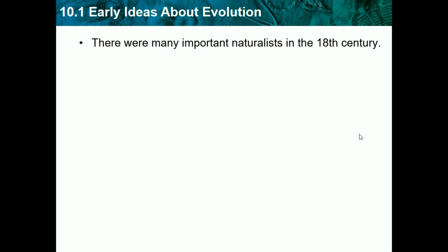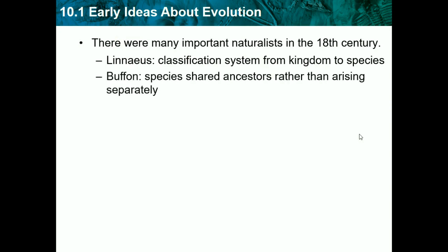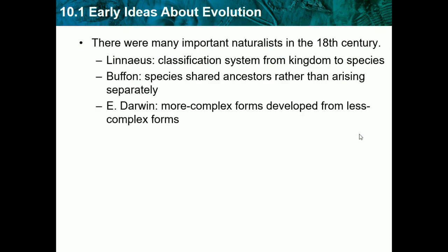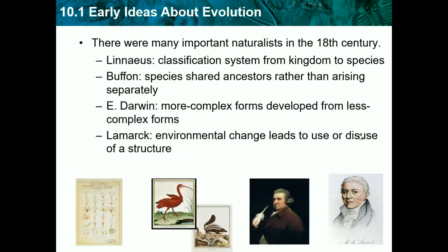There were many important naturalists in the 18th century. Linnaeus made the classification system for kingdoms to species. Buffon proposed species shared ancestors rather than arising separately. Darwin proposed more complex forms developed from less complex forms. And Lamarck said environmental change leads to use or disuse of a structure. These are just the scientists at the time, but we don't have to memorize them or their ideas, but in biology we'll eventually get to most of them.